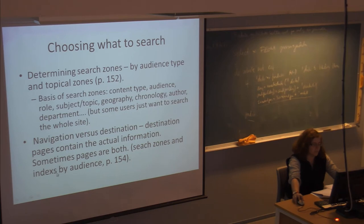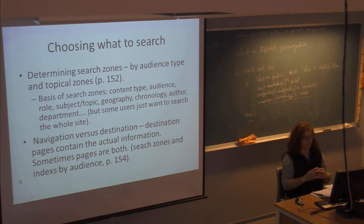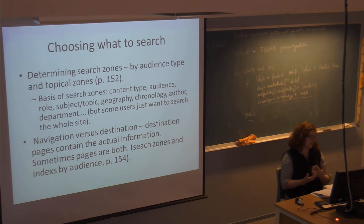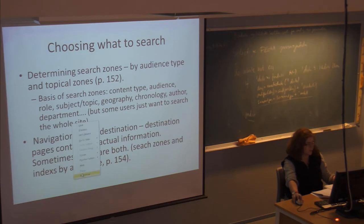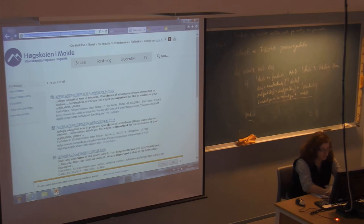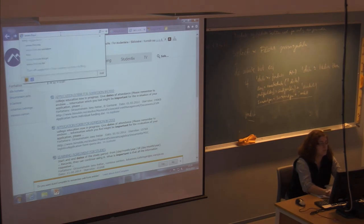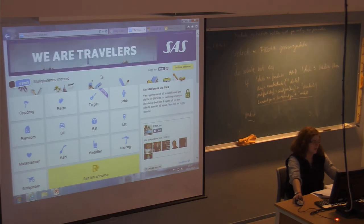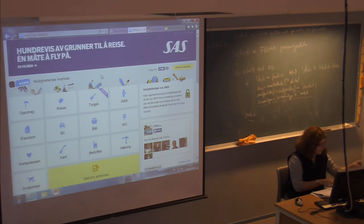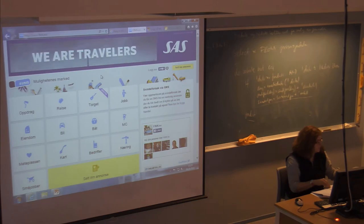You can use navigation versus destination. Some pages have mostly navigation tools that help you find things, while other pages are the destination — the page that has the content you're looking for. You can sometimes have pages that are a combination of both, like we saw on the recreational site. A lot of e-business sites have both. For example, FIN — when you go to the top page, it's mostly a navigation page, breaking things down into different types of zones — search zones to help make your search easier.